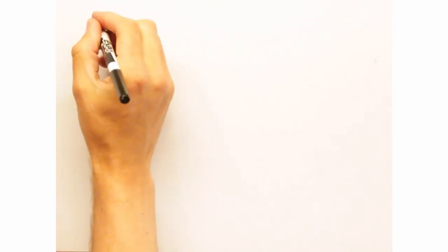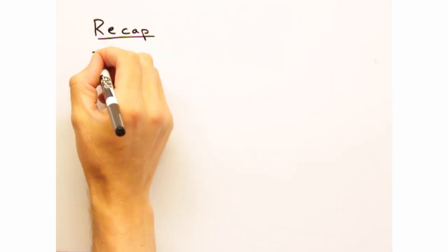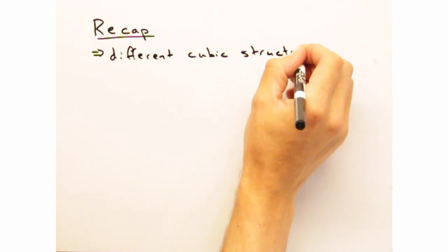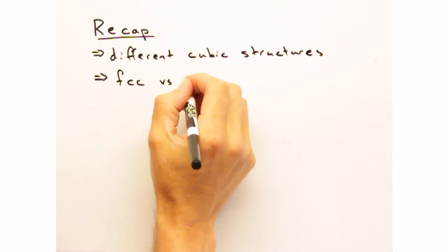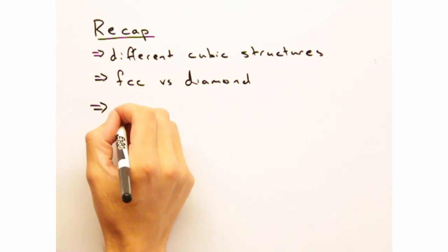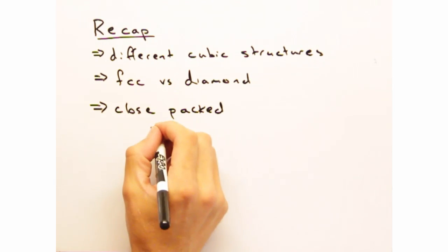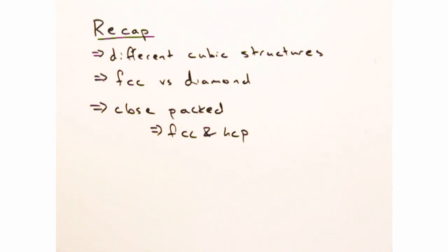Well, Eric, it looks like it's a good time to do a recap of today's video. Sounds good. Today we went over different types of centering in cubic systems, looked at the similarities between the FCC and the diamond structure, and compared both types of close-packed structures.